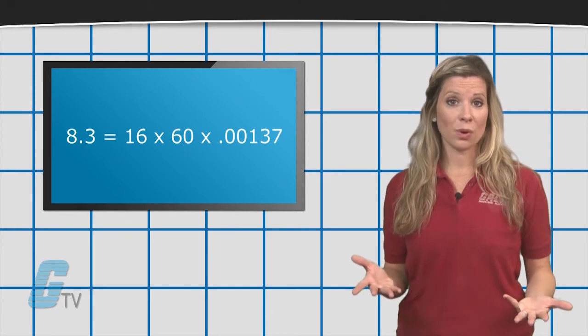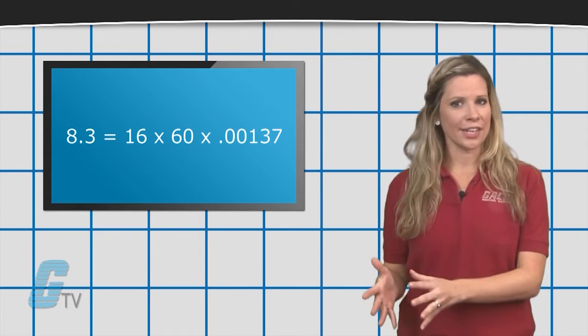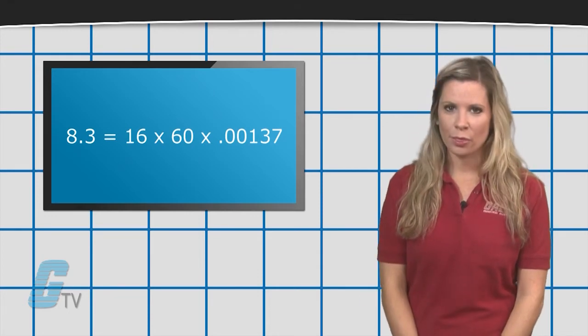If my impedance was .00137 henrys, a current of 16 at 60 hertz, then my voltage drop would be about 8.3.